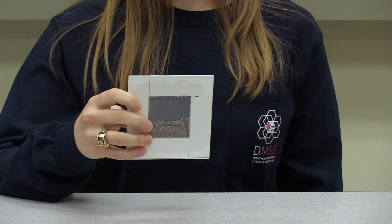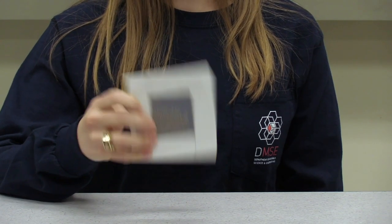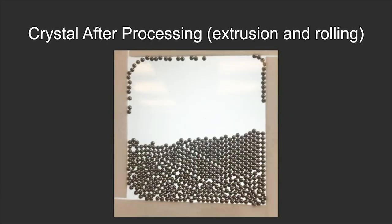Let's look at our model to understand how material processing leads to an increased number of defects. When we shake the model, we're able to add defects to the system. As you can see now, our model has an increased number of vacancies, line defects, and grain boundary defects.